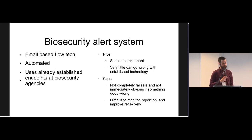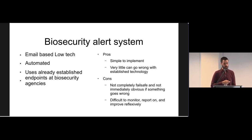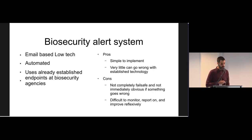At FIMBIF we operate a biosecurity alert system to connect occurrence data entering our central repository directly to the relevant people at the Natural Resources Institute and the Finnish Food Authority. The system uses a simple low-tech approach based on automated emails. The benefit is that it's simple to implement and maintain — particularly on the side of the biosecurity agencies, there's next to no extra work as they simply receive emails at already established inboxes used to receive alerts from the public and other agencies. This simplicity does come with a cost, however. It's not completely fail-safe and it's often difficult to know why or even if something has gone wrong. Monitoring and reflexive improvement is also not easy with such a simple system, and we typically know very little about what happens once an email alert has been sent.